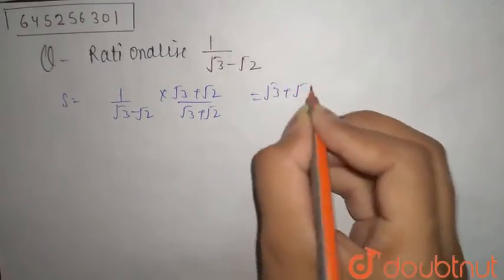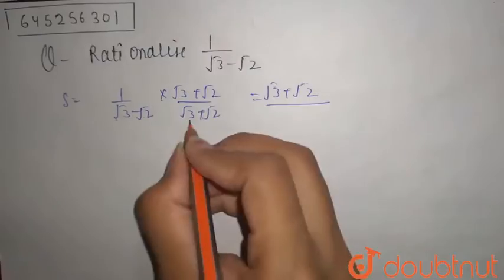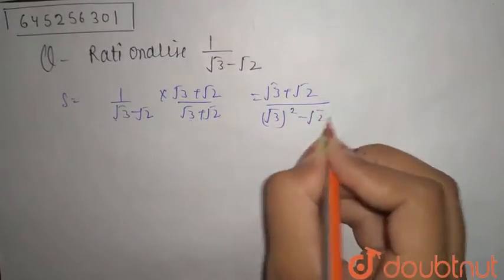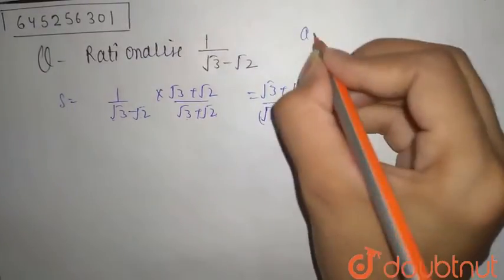This is a minus b times a plus b, that is the identity of a square minus b square. So this is a plus b times a minus b which equals a square minus b square.